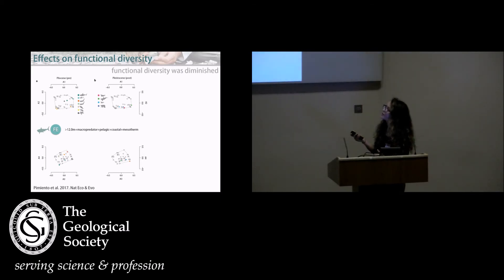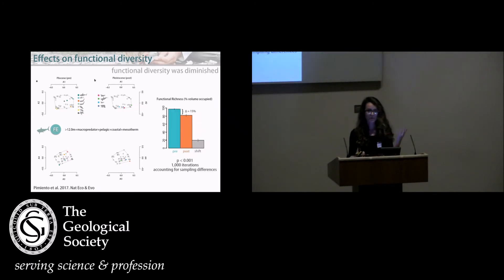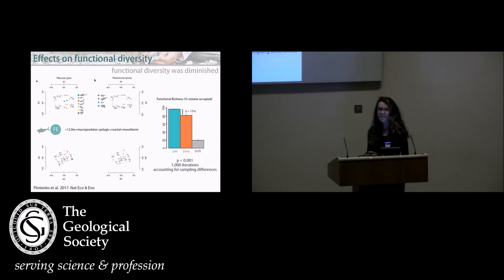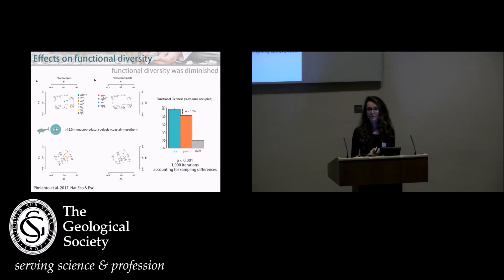Seven of these functional groups became extinct during this extinction, and four evolved in the Pleistocene. Once we accounted for sampling differences between these two communities and ran 1,000 iterations, we found that in the Pleistocene the functional richness was 15% less than in the Pliocene. Accounting for new species that evolved, the change was 16% — so the new arrivals didn't compensate for the species lost.